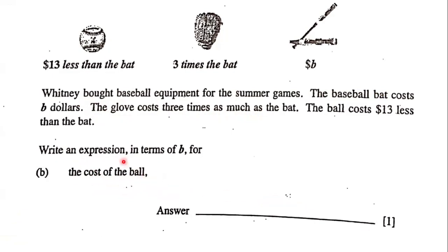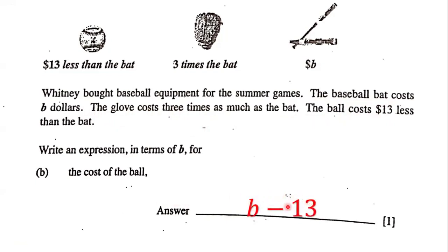Next, the question states: write an expression in terms of B for the cost of the ball. The ball costs $13 less than the bat. The baseball bat costs B dollars, so the cost of the ball is going to be B minus 13. B minus 13 is the cost of the ball because it's $13 less than the cost of the bat.